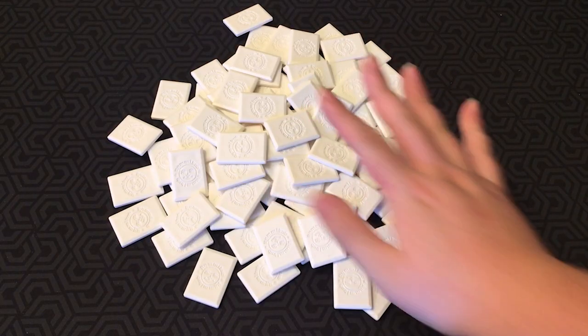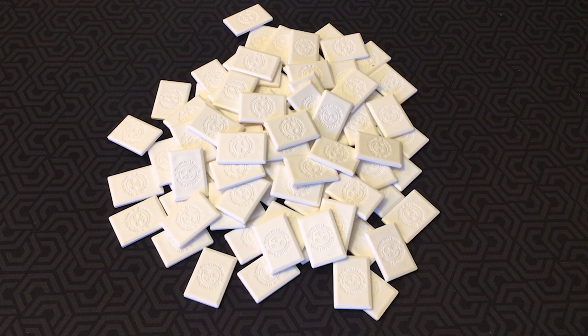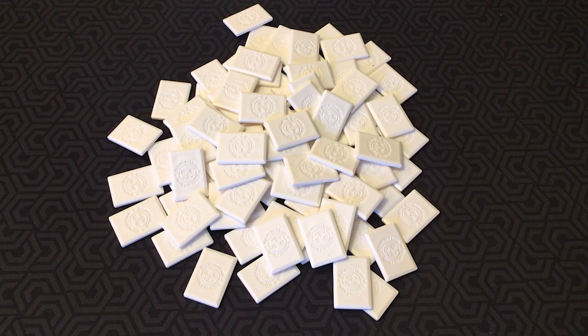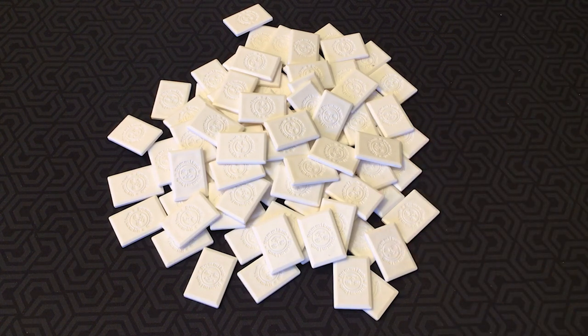So here you have all the tiles facedown. Each player gets 14 tiles and places them on their rack, and the remaining tiles are called the pool. Now you decide how many rounds you want to play. Each round is made up of multiple games.